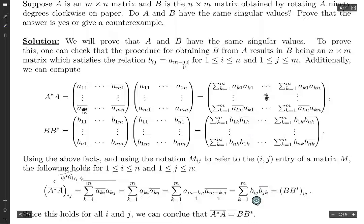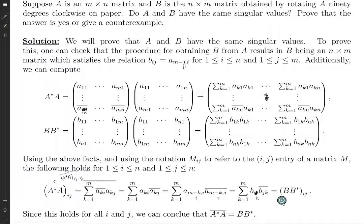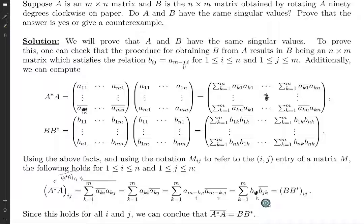There should be a K sum here: it should be B_{IK} and B_{JK}. So the IJ entry of the conjugate of A star A is the same as the IJ entry of B times B star. I and J correspond correctly to row and column numbers. Therefore, these two matrices are equal: the complex conjugate of A star A equals B times B star.